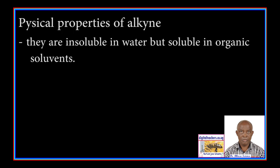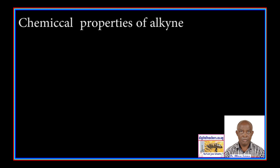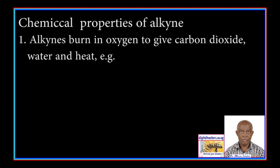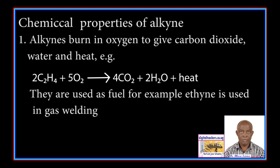Alkynes range from gases to liquids to waxy solids. Chemical property 1: alkynes burn in oxygen to give carbon dioxide, water, and heat. For example, ethyne plus oxygen gives carbon dioxide and water plus heat. Because they produce heat, they are used as fuel. For example, ethyne is used in gas welding.